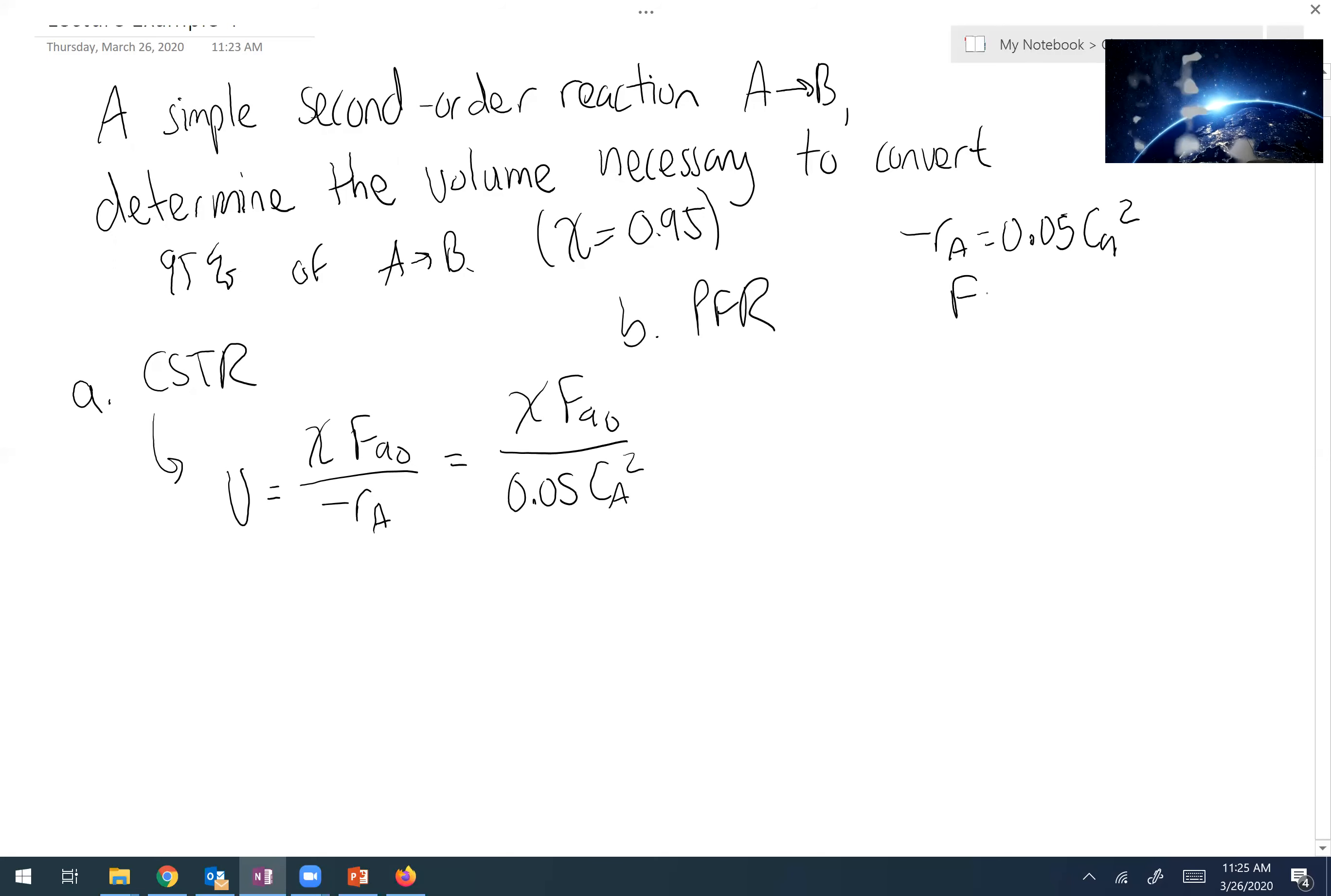Now it was given in the problem that our feed into the system was about 8 liters per second and our initial concentration CA0 was about 10 moles per liter. So since FA0 equals F0 times CA0, that tells me that's 80 moles per second.